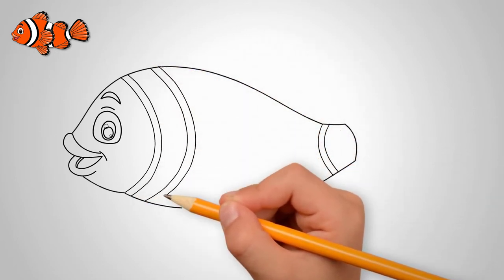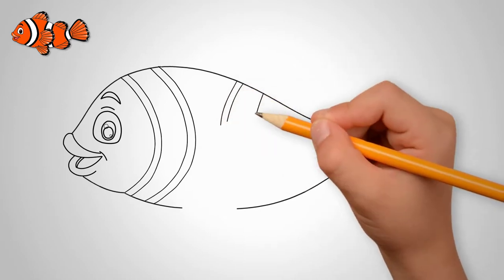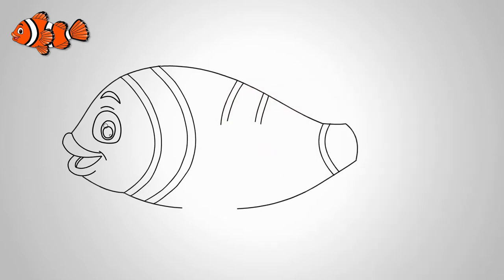Now separate the head of the fish from the body. That is, draw a line where the fish gills. The gills of the fish breathe.